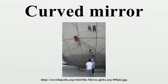A convex mirror is a curved mirror in which the reflective surface bulges toward the light source. Convex mirrors reflect light outwards, therefore they are not used to focus light.